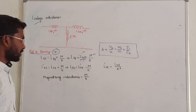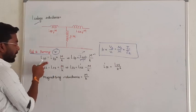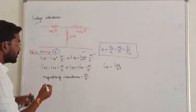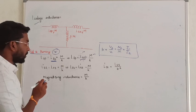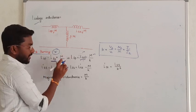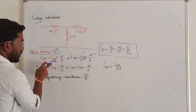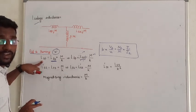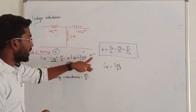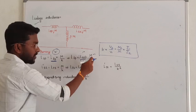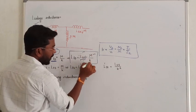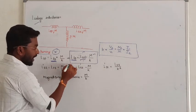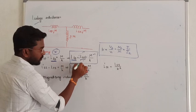The self inductance offered by the transformer referred to primary equals leakage inductance referred to primary plus mutual inductance divided by k. Rearranging, the leakage inductance referred to primary equals self inductance offered to primary minus mutual inductance divided by the turns ratio k. Substituting gives you the leakage inductance referred to primary.